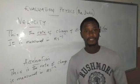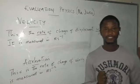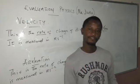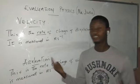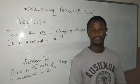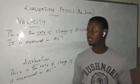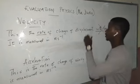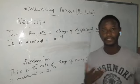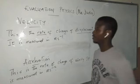Velocity is measured in meters per second — that is the unit of velocity. It has a similar unit to speed, but they are quite different. One difference is that velocity is a vector quantity while speed is a scalar quantity. Secondly, velocity has to do with displacement, whereas speed has to do with distance. So they are two different concepts.